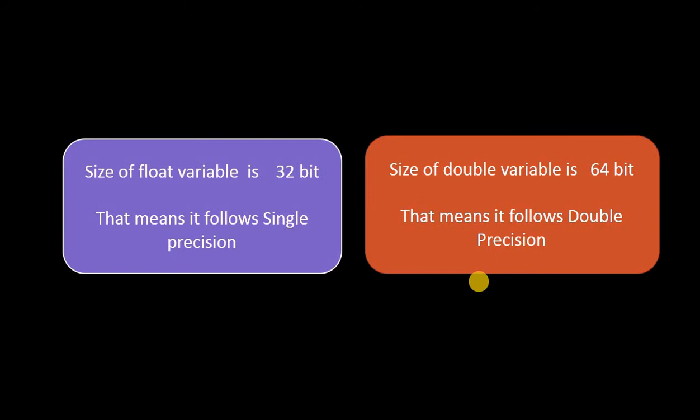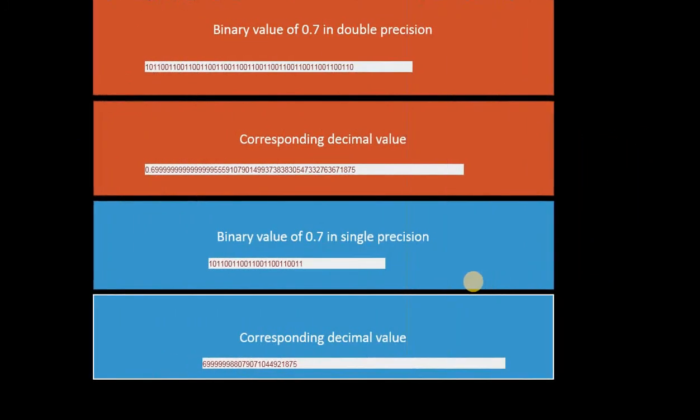Now here you can see the binary value of 0.7 in double precision. This one is larger than this value because it is in 64 bit and this is in 32 bit. Obviously this binary value is larger than this binary value. But just think about one thing - that both are 0.7. It is in single precision and in 32 bit, and it is in double precision and it takes 64 bit.